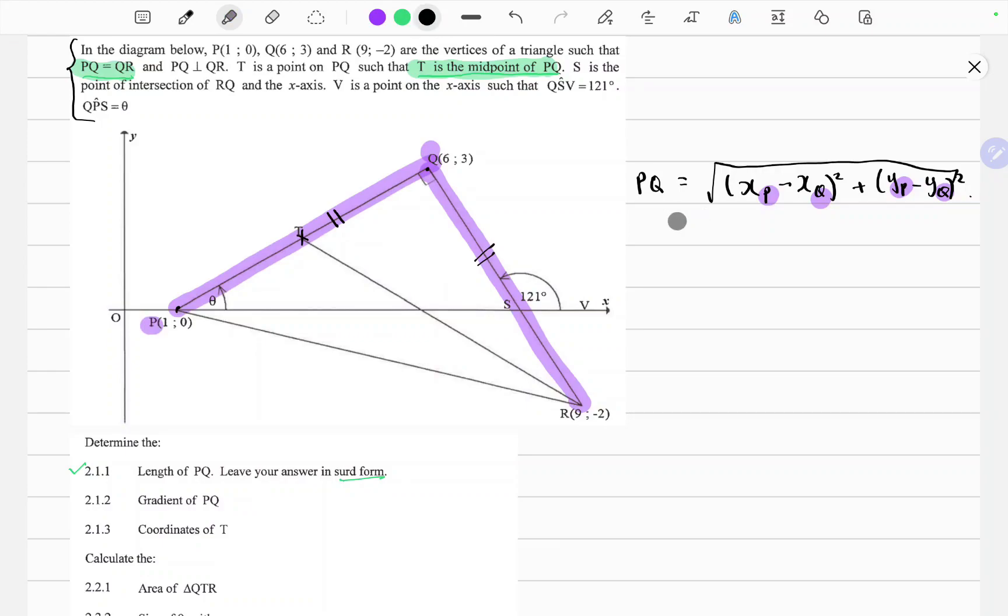So now we can substitute. So substitute XP. A lot of times students are not careful with the substitution. So it's important that you substitute the correct coordinates in the correct places. YP is zero minus YQ is three squared. So this here gives us minus five the whole squared plus minus three the whole squared and this is equals to 25 plus 9. So this gives us square root of 34 units.